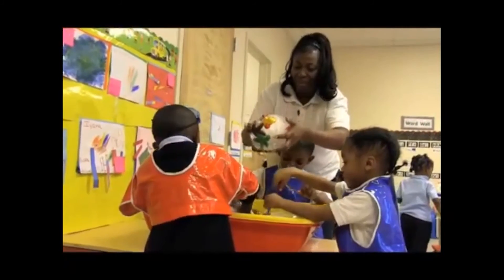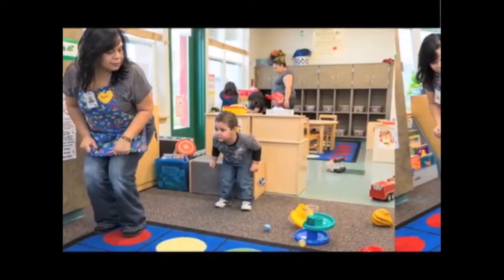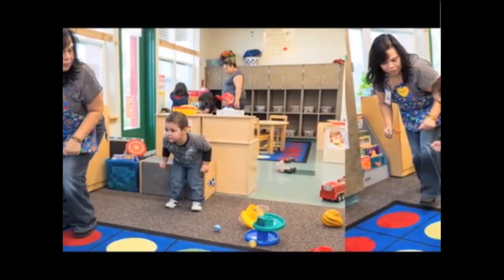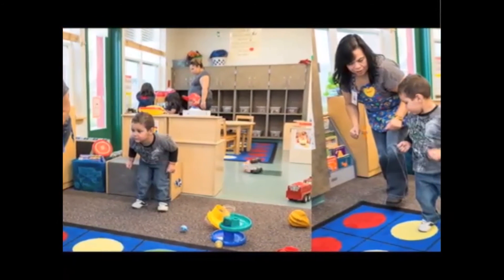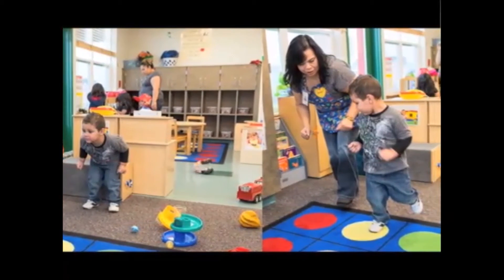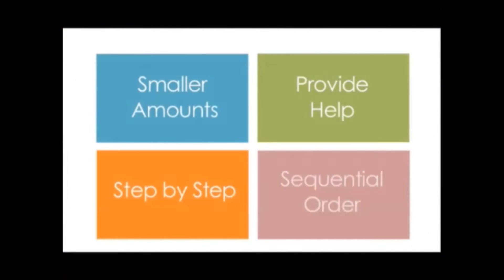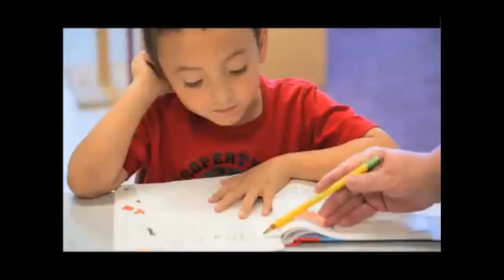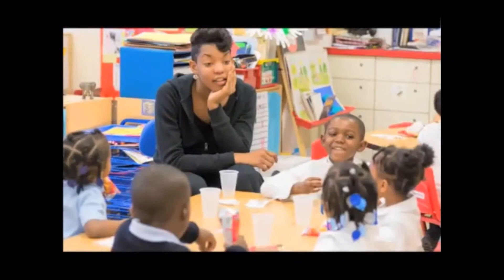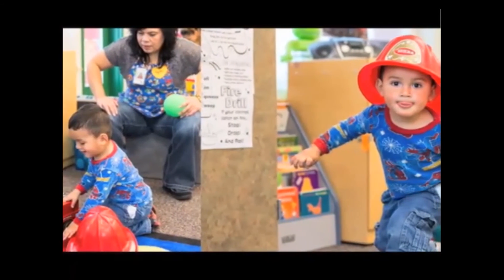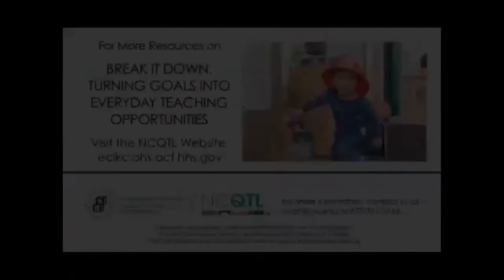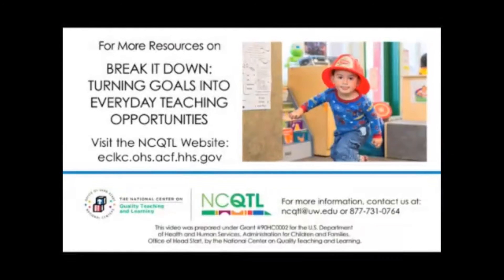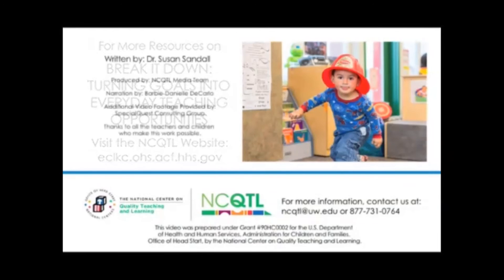In this short presentation, we learned about taking big learning goals, examining them, and breaking them down into smaller parts — that can make learning easier and a lot more fun. We learned about four ways to break down goals and teach the parts: smaller amounts, provide help, step by step, and sequential order. All of these methods can be useful for children who need a bit more help learning their big goals. Take a look at our longer in-service suite to learn more and to practice breaking down goals to create teaching and learning opportunities.